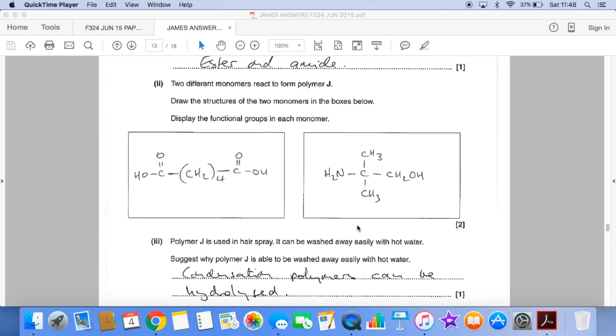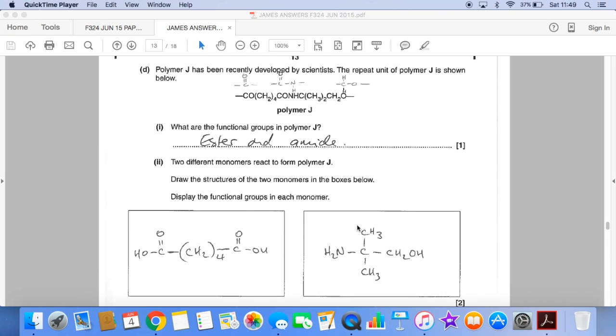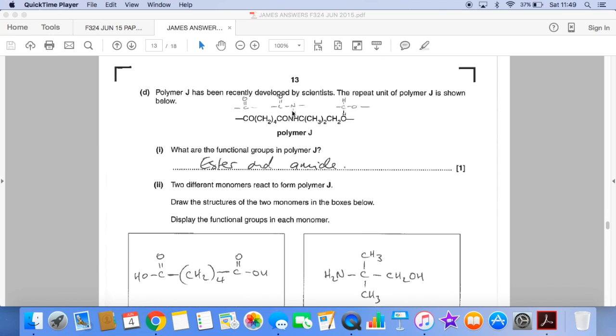And finally, why is polymer J able to be washed away easily with hot water? And it's because this condensation polymer can be hydrolyzed. And if you remember, it's this bond here, this amide bond breaks, and also the ester bond can break as well.